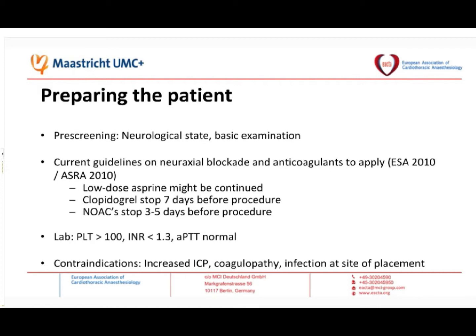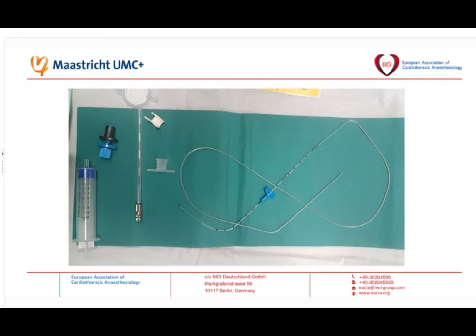This is the set we are using for our patients. It's made by Arrow Teleflex. It's a single orifice catheter — just an example. You can use a normal epidural catheter as well; there are specific multi-orifice sets available from industry. We chose this set because the catheter contains a reinforcement with a thin metal layer inside, which avoids kinking of the catheter. We had some problems with kinked catheters in the past, so we switched to these. There are a number of sets available from different manufacturers.